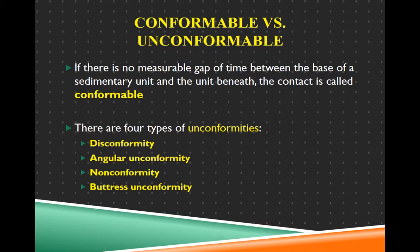There are four types of unconformable contacts, or unconformities as the general term. The four types are disconformity, angular unconformity, nonconformity, and buttress unconformity. These are important terms — not just because they're on the test, but because all geologists recognize and understand them. Whether you're a geologist or an engineer talking to a geologist, it's important to know what they're talking about.